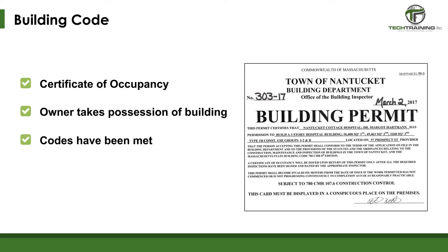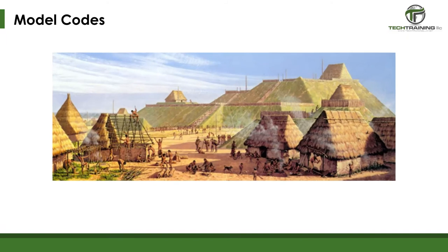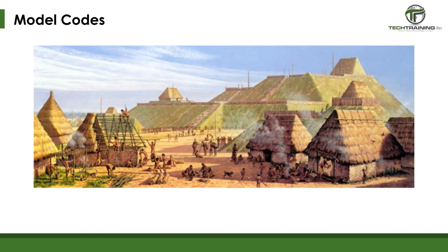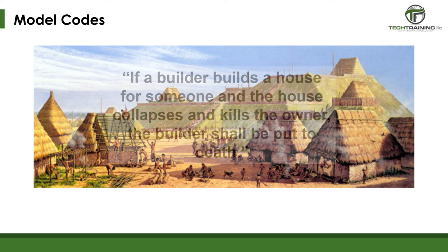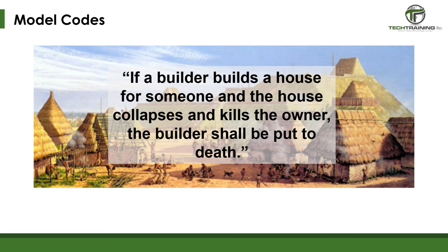Now let's talk about model building codes. People are often surprised to find out that building codes are not a creation of modern civilization. In fact, the earliest known written law of codes dates back to Babylon around 1760 BC under King Hammurabi. These codes contained several specific provisions related to construction. Though they did not explain how to build, they did explain the consequences of poor construction. Part of the code stated: 'If a builder builds a house for someone and the house collapses and kills the owner, the builder shall be put to death.' — King Hammurabi of Babylon, circa 1760 BC. Certainly, a solid incentive to do good work.